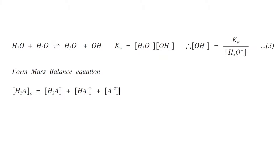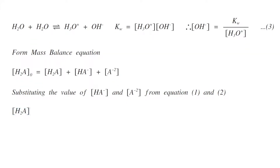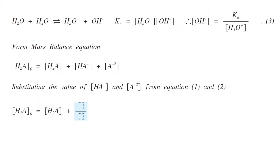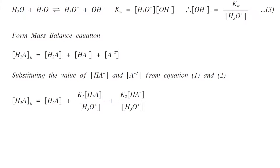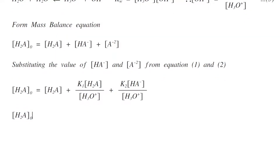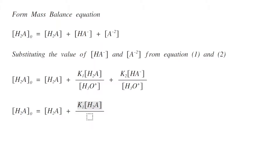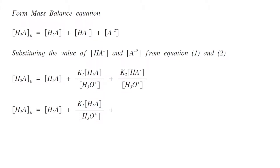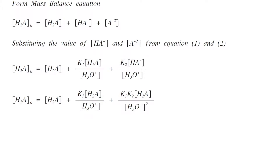Substituting the values of [HA⁻] and [A²⁻] from equations one and two into the mass balance, we get [H2A]₀ equals [H2A] plus K1[H2A]/[H3O⁺] plus K1K2[H2A]/[H3O⁺]², after substituting the value of [HA⁻] from equation one into the A²⁻ term.